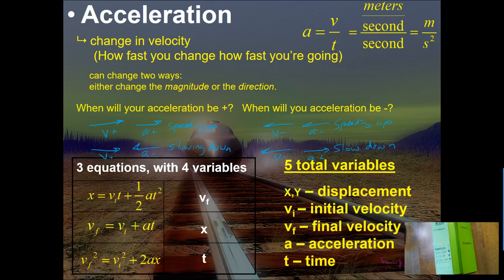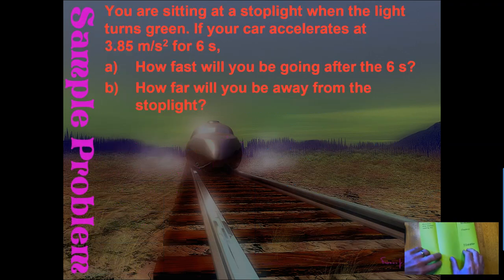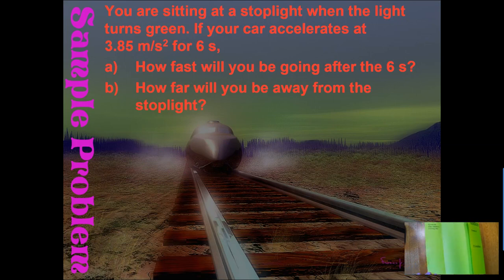Now, talking about sample problems. If you flip to the inside where it says horizontal, put this sample problem: You are sitting at a stoplight when the light turns green. If your car accelerates at 3.85 meters per second squared for six seconds, then A) how fast will you be going after the six seconds, and B) how far will you be from the stoplight? Pause the video and write out the sample problem.